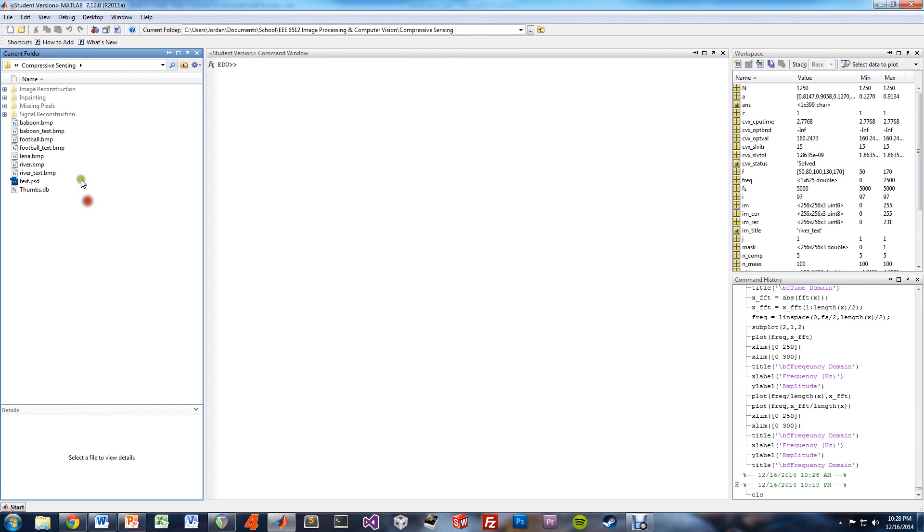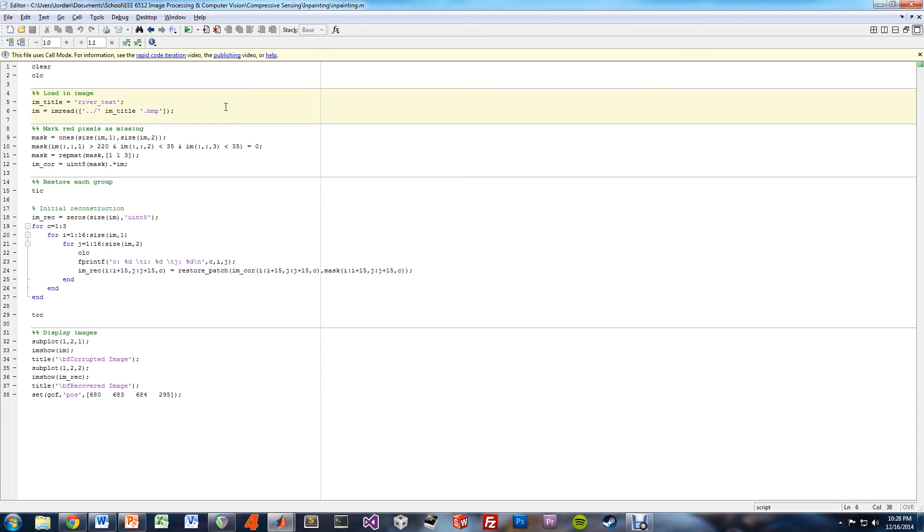The final folder relates to the inpainting example shown. The same restore patch m function is used in this. For the main program here, we load in the image. Since the focus of this was on demonstrating compressive sensing for inpainting recovery,